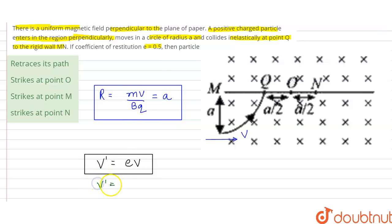So our V' comes out to be 0.5V. This is equal to V by 2. Now if the particle strikes here so we can say that this particle rebounds with the velocity of V by 2.